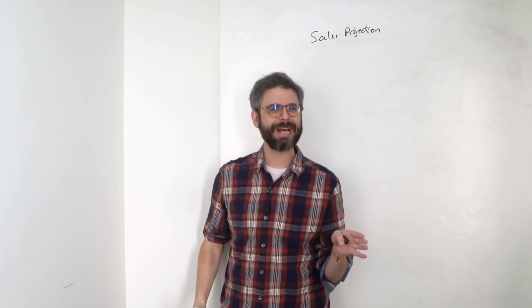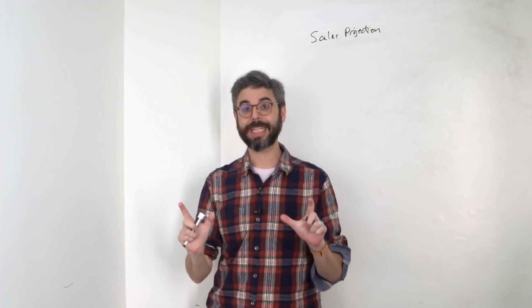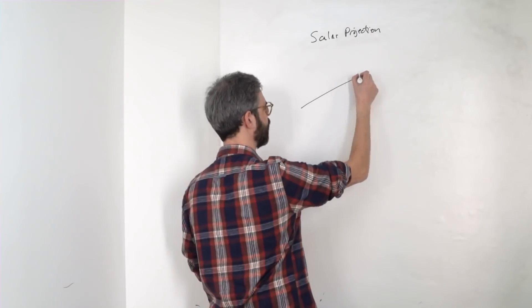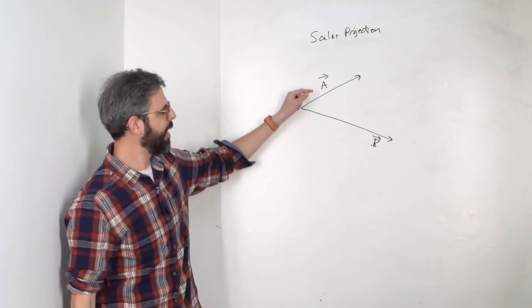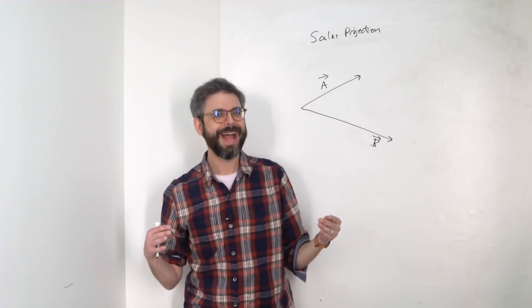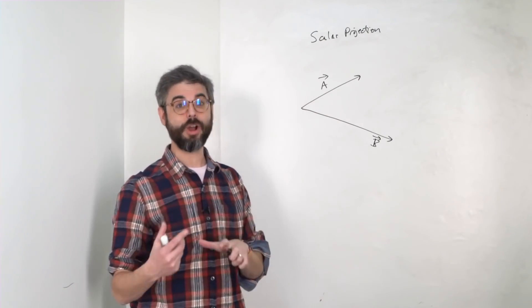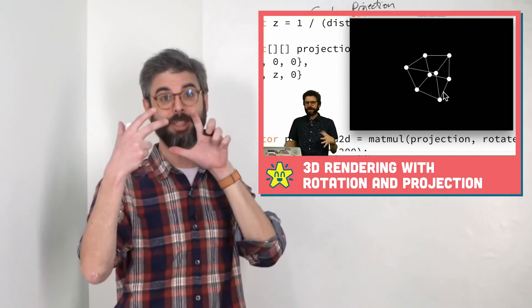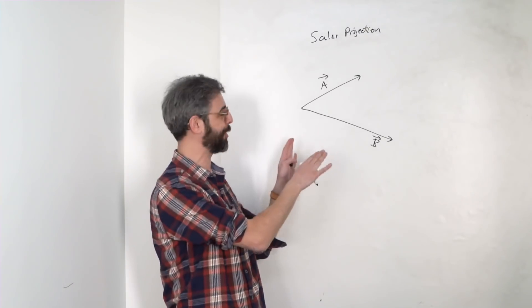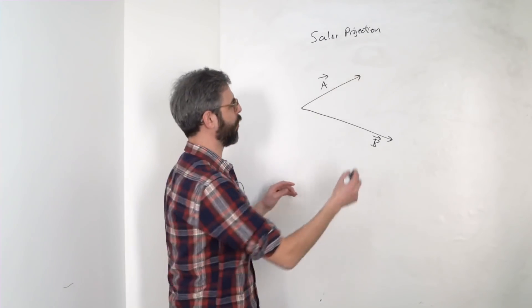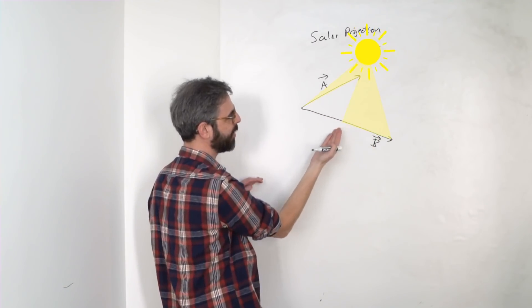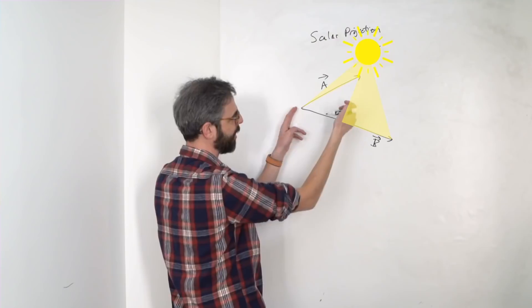So what is scalar projection in the first place? Scalar projection is a concept that applies when you have two vectors. Here I have vectors A and B. Projections are things I've covered before. I did a whole video on how to render 3D geometry in a 2D canvas with projection. Here we've got a simpler scenario. Let's say there's a light source up here.